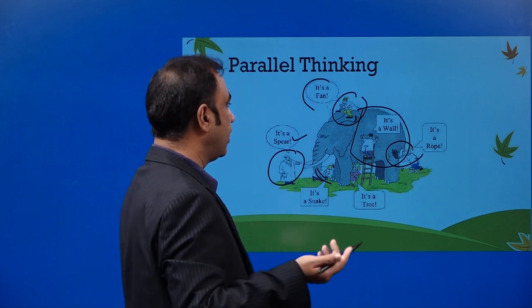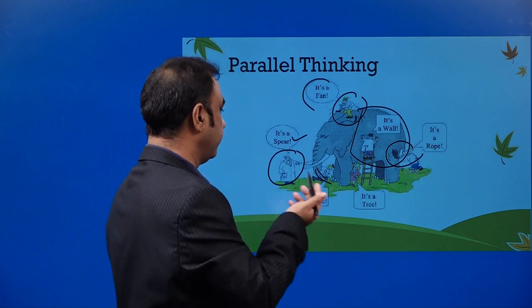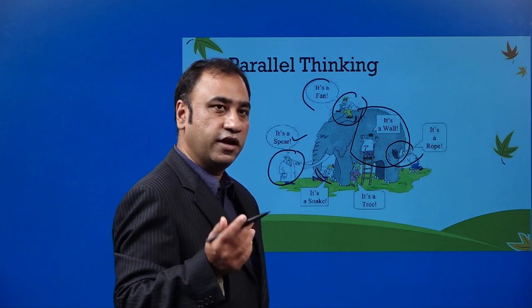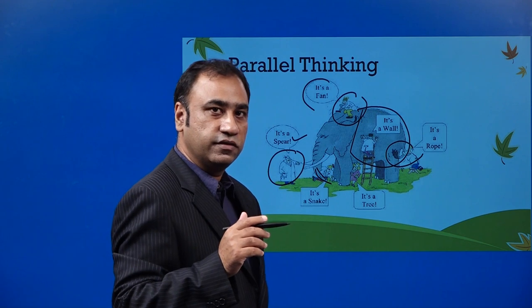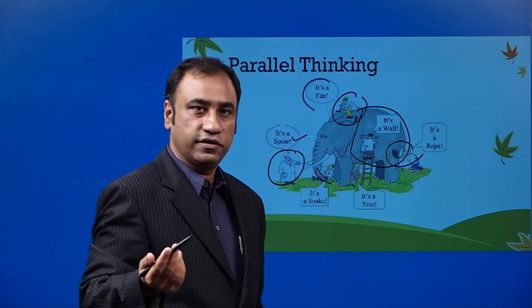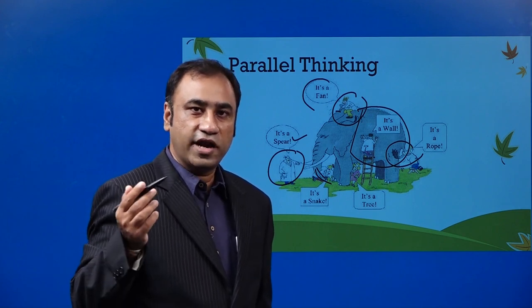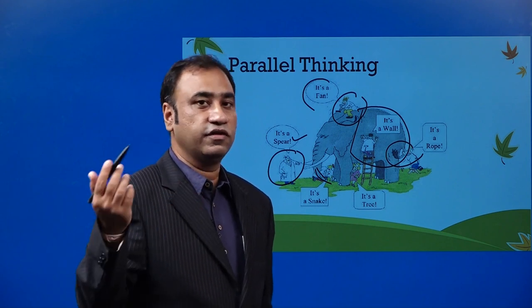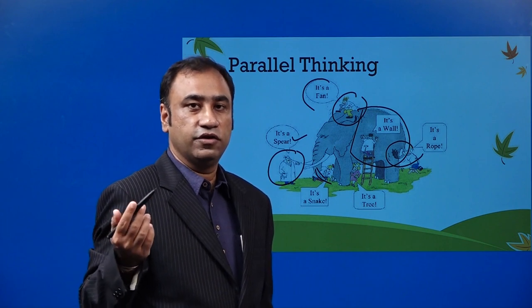He is thinking this is a rope of an elephant. This guy is thinking this is a spear. This person thinks it is a snake. From this picture, what we can understand is every person involved, though this is an elephant, they are thinking completely differently. Somebody is thinking wall, fan, rope, tree, snake, spear. Everybody is thinking parallelly in a different way. Can we also think of one aspect in different ways? This is called parallel thinking.